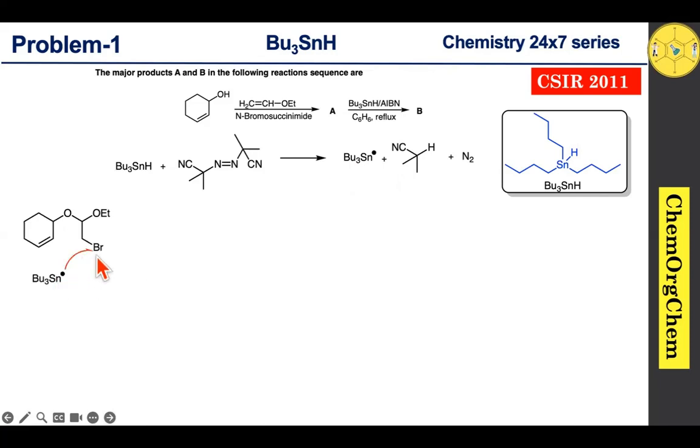This attacks the bromine atom, resulting in homolytic cleavage of the carbon-bromine bond to produce the corresponding carbon-centered radical. After generation of this carbon-centered radical, it readily attacks this alkene bond. One of the electrons comes here, then this electron also comes here, making a new bond which produces the corresponding carbon-centered radical.